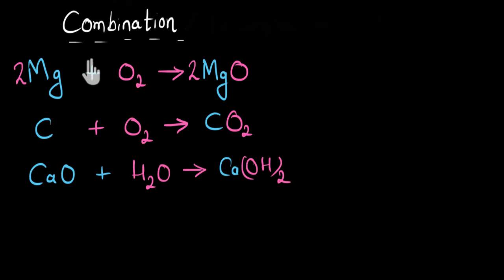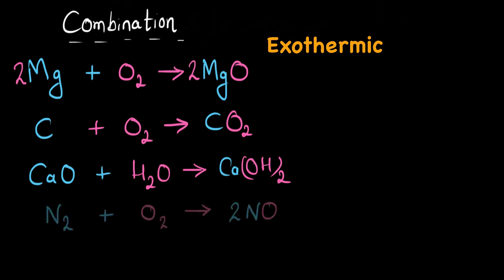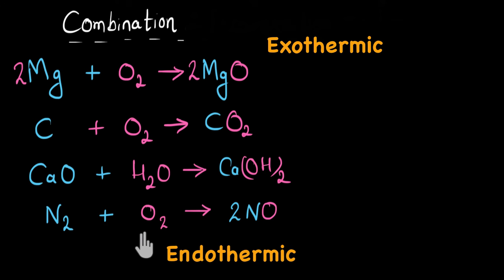We've now looked at many examples of combination reaction, where multiple reactants combine to give one single product. In all of these reactions, energy was given out — such reactions are called exothermic reactions. In general, combination reactions are exothermic in nature, meaning they give out heat. But not all combination reactions are exothermic; for example, when nitrogen combines with oxygen to form nitrogen oxide, a lot of heat needs to be given in — so that is an endothermic reaction.